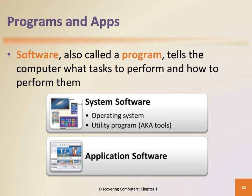The operating system is a set of programs that coordinates all activities among computer hardware devices. Utility programs, also known as tools, allow the user to perform maintenance-type tasks usually related to managing a computer, its devices, or its programs. Once the system software is loaded, you are able to use application software. Application software allows you to perform a wide variety of tasks.